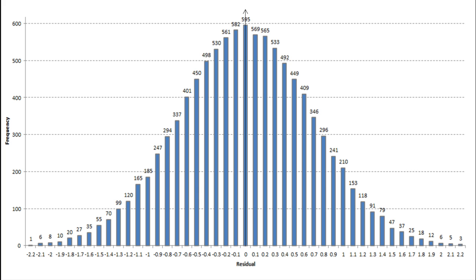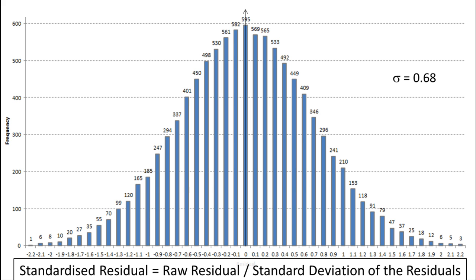The disadvantage with raw residuals is that the spread of the data may vary significantly year to year or exam to exam. In this case, our values go from minus 2.2 to 2.2. This is why we standardise. It makes residuals comparable across different subjects or different years. To do so, we first have to calculate the standard deviation of these data as a measure of the spread. In this case, we have a standard deviation of 0.68. And then we divide our raw residuals by the standard deviation.